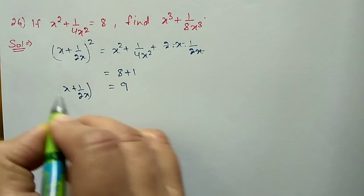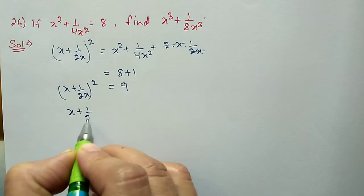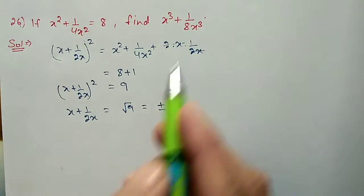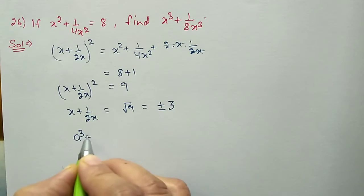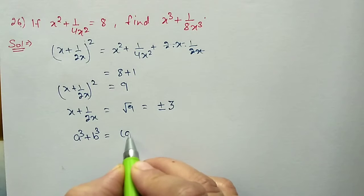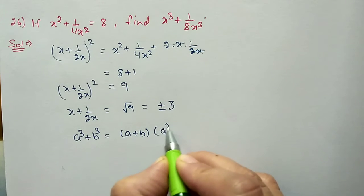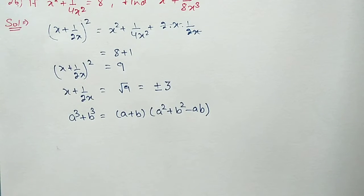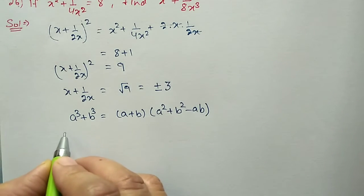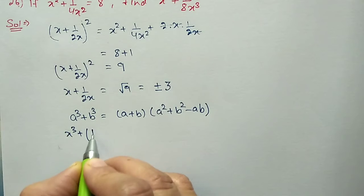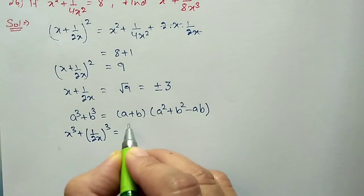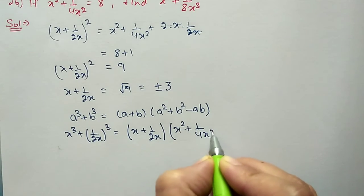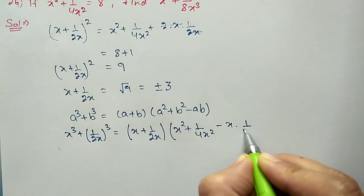So x + 1/2x = √9 = ±3. Now we find x³ + 1/8x³ using the formula a³ + b³ = (a + b)(a² + b² − ab), where a = x and b = 1/2x. Substituting: x³ + (1/2x)³ = (x + 1/2x)(x² + 1/4x² − x × 1/2x).